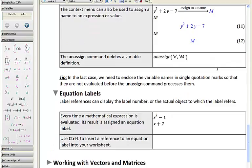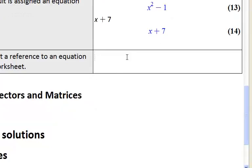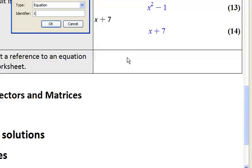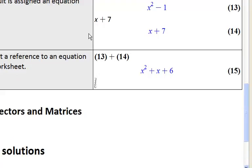You may have noticed a steadily increasing number on the right side of our session — these are what we call equation labels. Now we have equation labels 13 and 14 active. If we want to refer to these, we press Ctrl-L on the keyboard and can then enter equation label 13 plus equation label 14, press OK, and have that return a result to us.